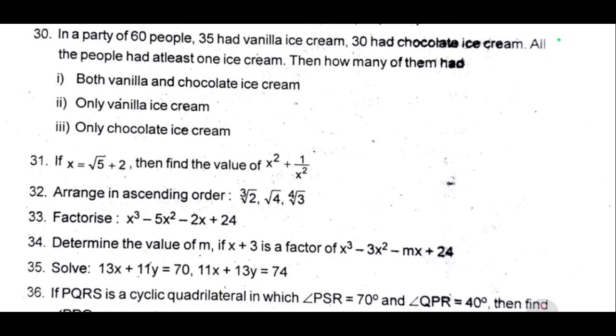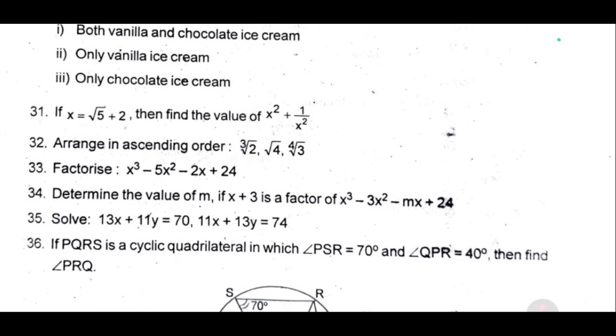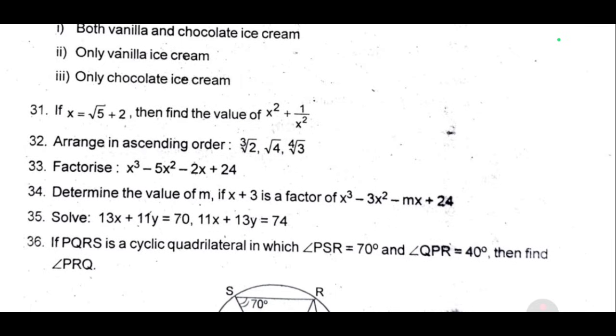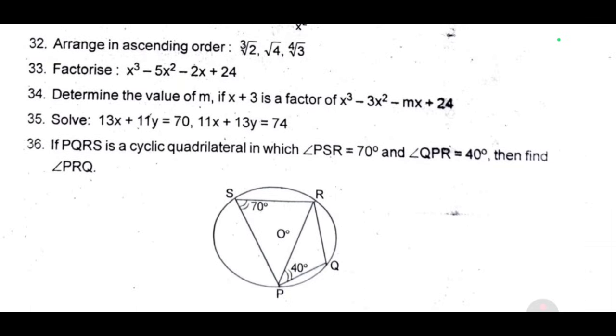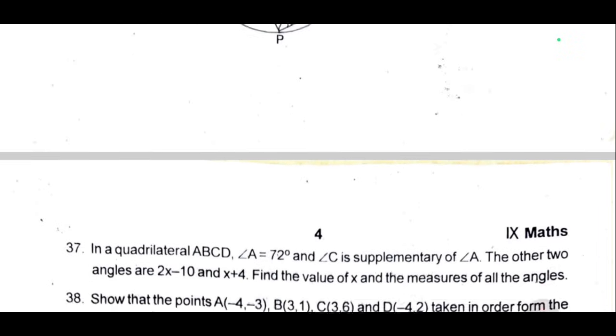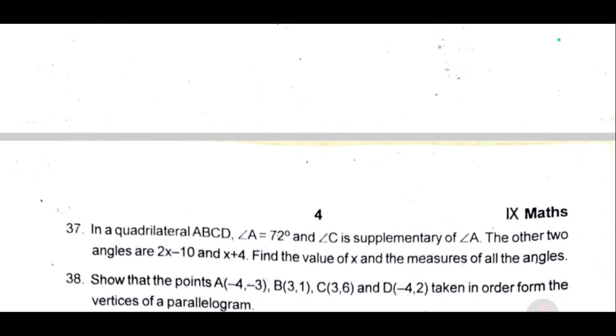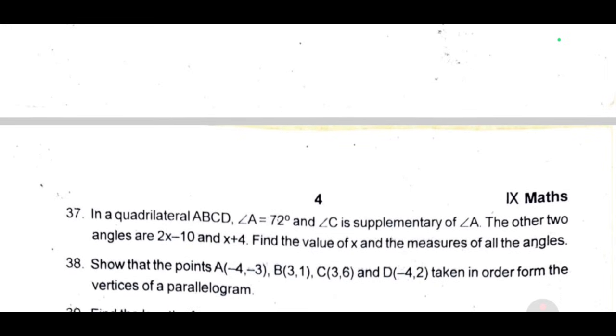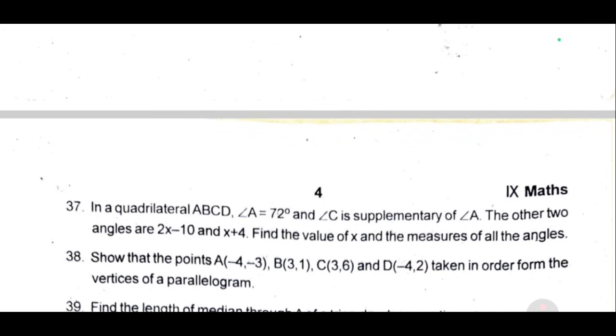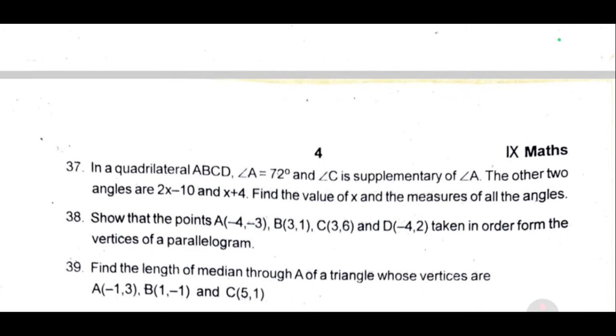35, 13x plus 11y equal to 70, 11x plus 13y equal to 74. 36, if PQRS is a cyclic quadrilateral in which angle PSR equal to 70 degree, angle QPR equal to 40 degree, then find the angle PRQ. 37, in a quadrilateral ABCD, angle A equal to 72 degree, angle C is supplementary of angle A. The other two angles are 2x minus 10 and x plus 4. Find the value of x and the measures of all the angles. 38, show that the points A minus 4 comma minus 3, B 3 comma 1, C 3 comma 6, D minus 4 comma 2, taken in order, form the vertices of a parallelogram.